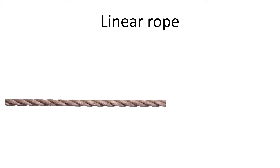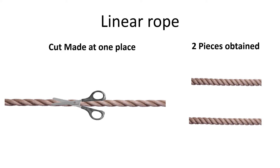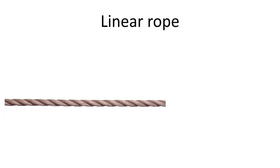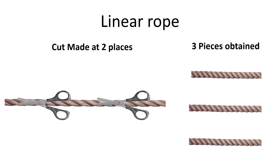Before we go on to DNA, let's imagine a linear rope. We have a linear rope which I am cutting using a scissor at one place. We all know that we will get two pieces if we make a cut at one place. If we use the same linear rope and make cuts at two places, three pieces of the rope will be obtained.